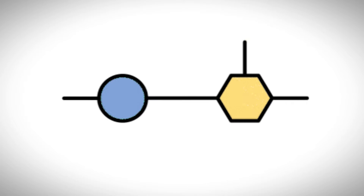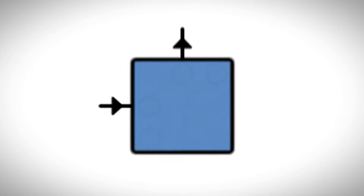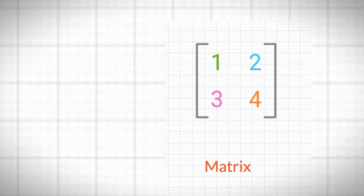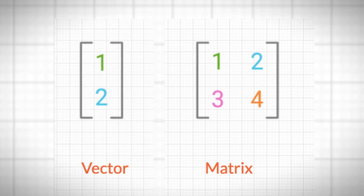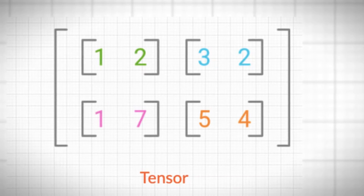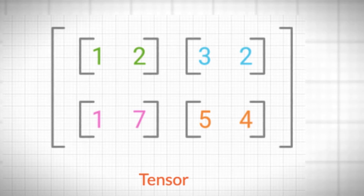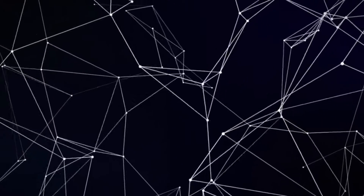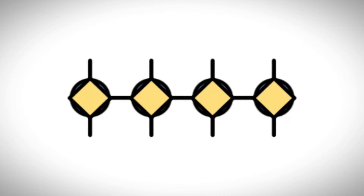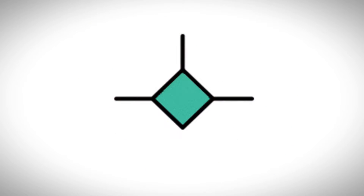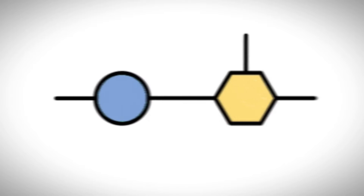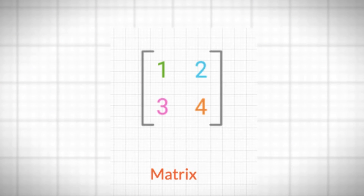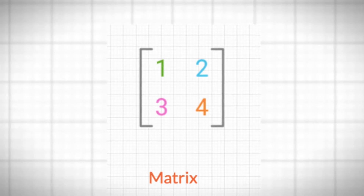Tensors are mathematical objects that can have multiple indices, such as matrices or vectors. For example, a matrix is a tensor with two indices, and a vector is a tensor with one index. Tensors can also have more than two indices, such as a cube or a hypercube. A tensor network is a way of representing a high-dimensional tensor using a network of smaller tensors. Each node in the network corresponds to a smaller tensor, and each edge corresponds to an index shared between two tensors. For example, a matrix can be represented as a tensor network with two nodes and one edge, and a cube can be represented as a tensor network with eight nodes and twelve edges.